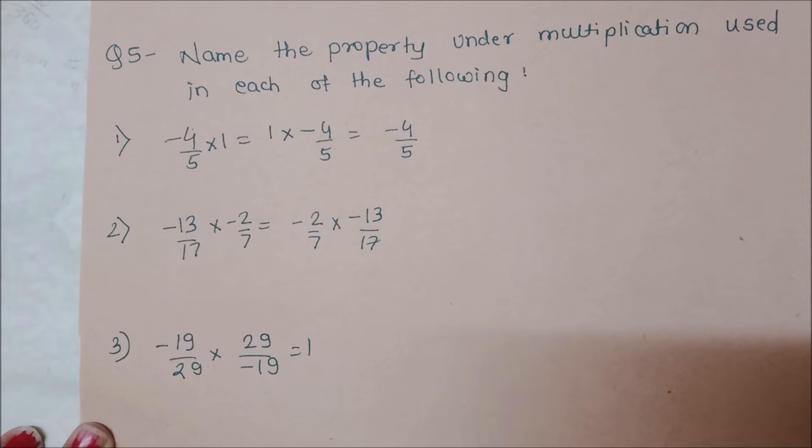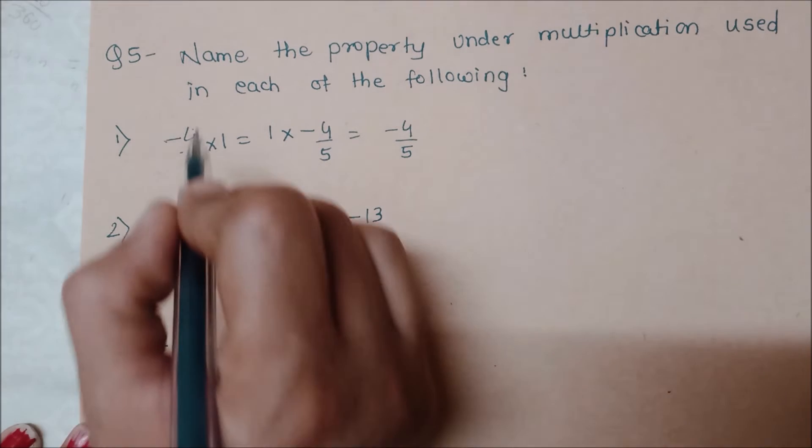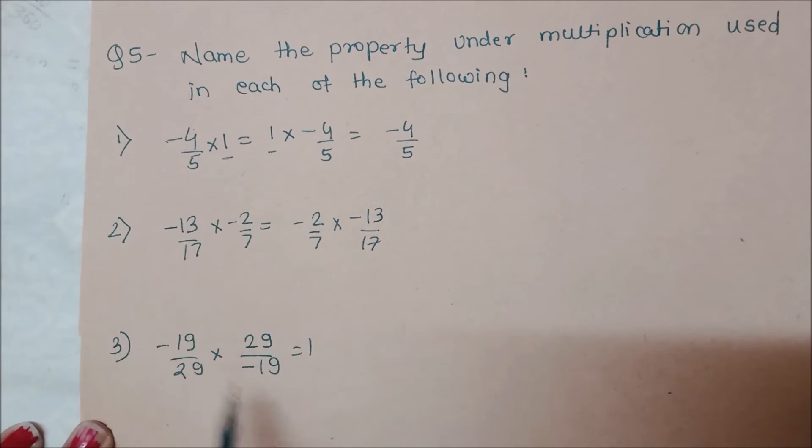First, we have given minus 4 upon 5 into 1, and 1 into minus 4 upon 5. Here is our 1 which is common.